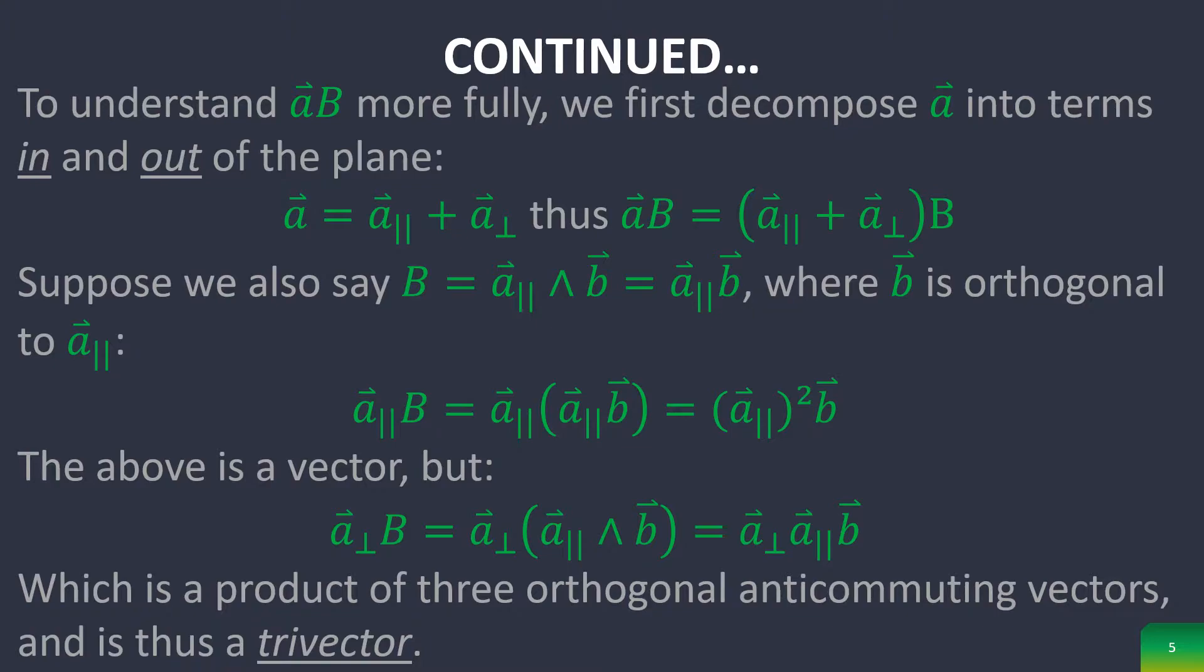To further understand this product between a vector and a bivector, consider the general vector A and general bivector B. We first decompose A into terms in and out of the plane, meaning A that's within the plane parallel to B, and perpendicular to the plane of B.